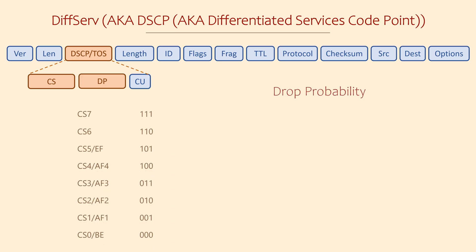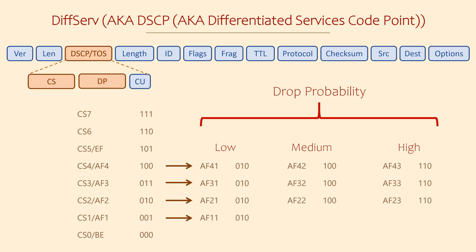But we still have three bits from the drop probability field. These are kind of like a subclass within each Assured Forwarding class. That means that we could have interactive video and streaming video in the same class, but we could assign them different drop probabilities. This means that a router could prioritize interactive video over streaming video. One last thing to notice here is that we don't have multiple drop probabilities for every class. The reason is we don't really need that many different combinations. Even complicated networks are fine with the classes and drop probabilities shown here.